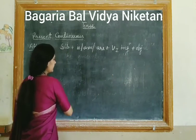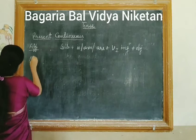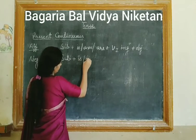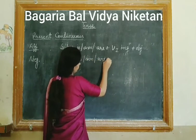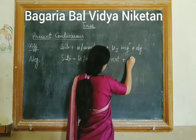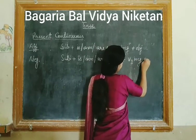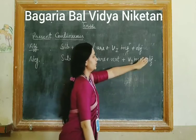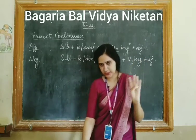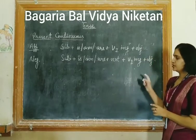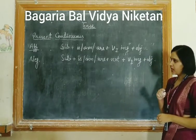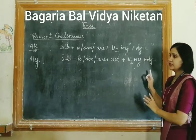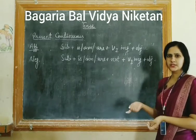Next is the negative sentence formula: Subject + is/am/are + not + verb's first form with -ing + object. For example: 'She is not going home' — wo ghar nahi ja rahi hai. 'She is not doing her work' — wo apna kaam nahi kar rahi hai. 'I am not interested in this subject' — meri ruchi nahi hai is subject mein.